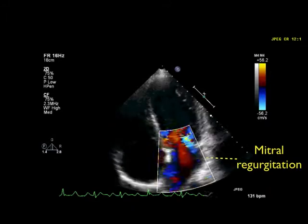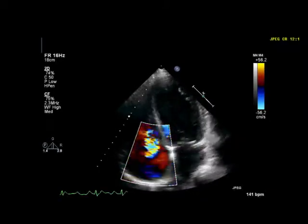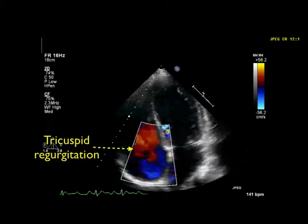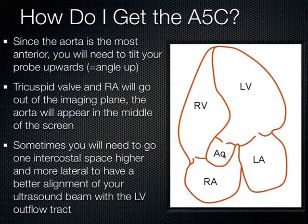Here is another example of a blue jet hitting the back wall of the left atrium. We can also see a jet on the tricuspid side — so you can evaluate both the mitral and the tricuspid valves in the apical 4 chamber. To get the apical 5th chamber, you simply tilt the probe a little bit more anteriorly.